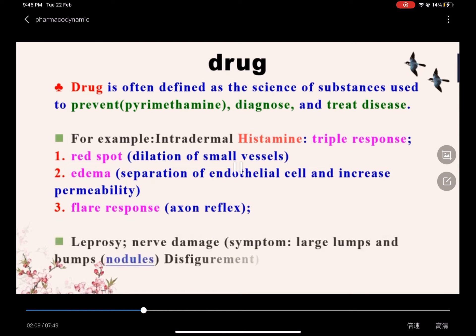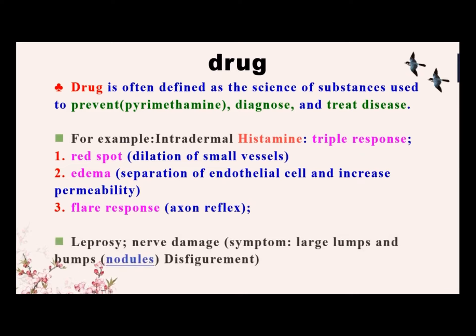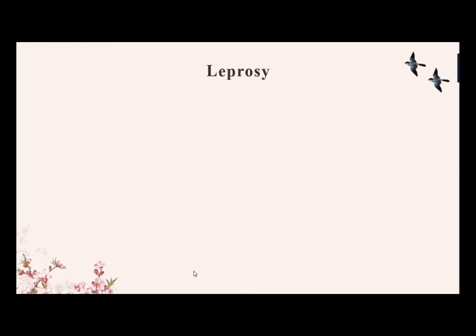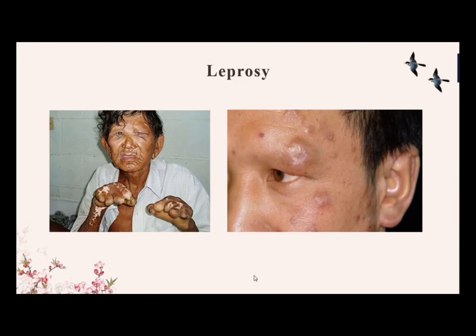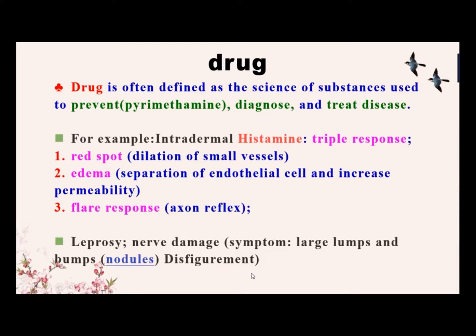The flare response is a result of the axon reflex. Have you ever heard about leprosy? It's a contagious disease. We can find descriptions of it in the Bible. Leprosy could cause nerve damage. Its symptoms include lumps and bone deformities — we call it nodules. They also cause disfigurement. The patient with leprosy whose nervous system was damaged cannot perceive the axon reflex, so the flare response will not appear. Therefore, intradermal histamine will not induce a triple response. From this result, we could diagnose the patient as suffering from leprosy.